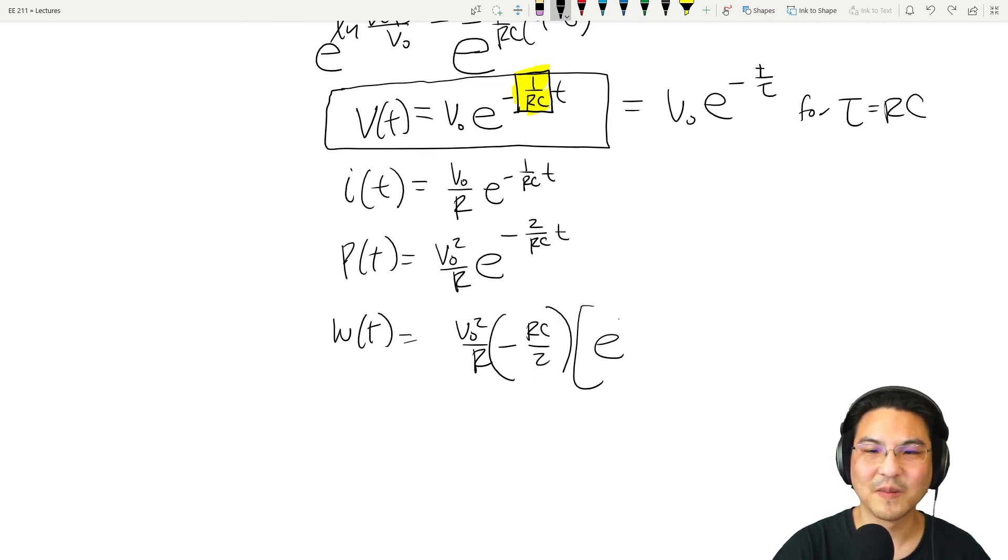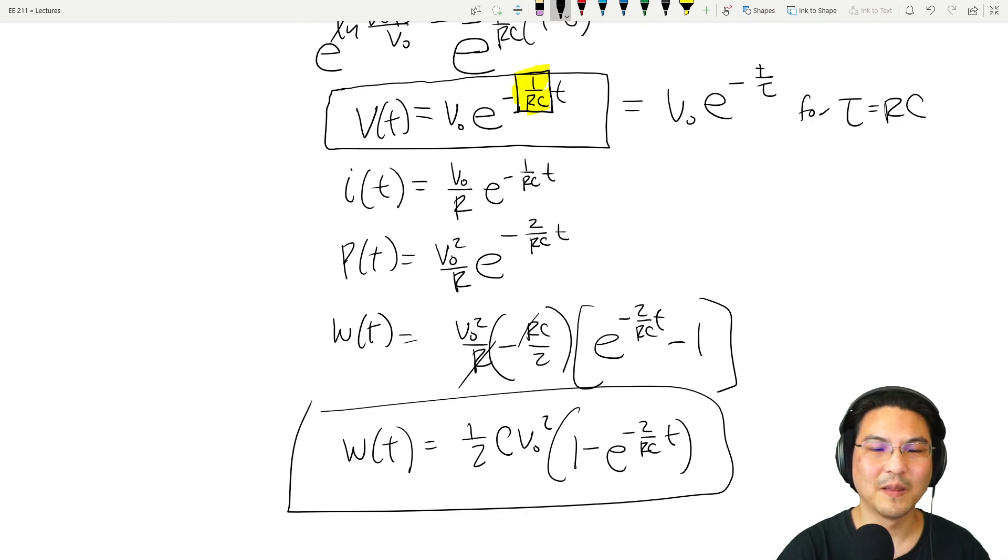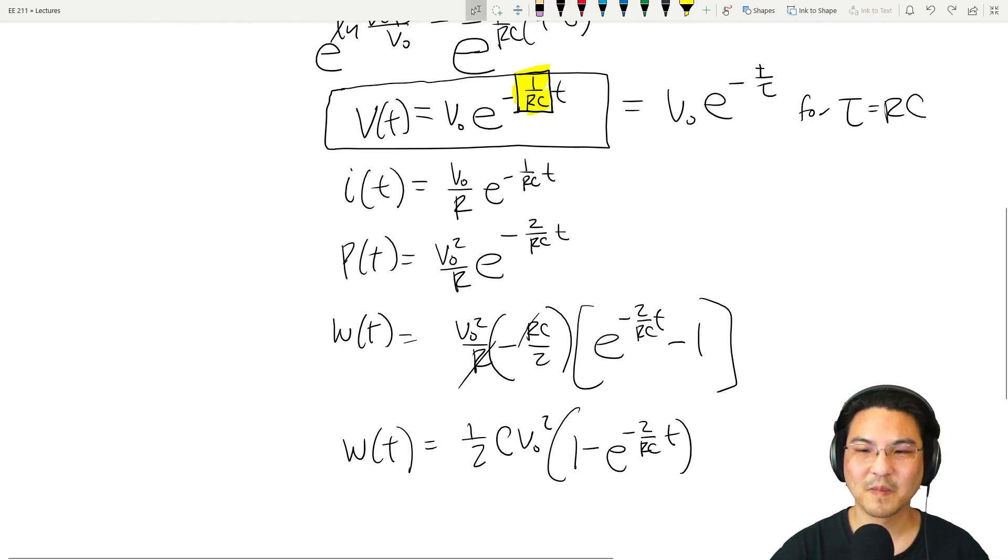It's this times this from zero to t. So if we evaluate that, then it looks like minus one. Let's clean that up just a little bit. So we got R and R, so we got one half C V naught squared. And then see this minus sign, I'll just multiply that through here: one minus e to the minus 2 over RC times t. And there we go, this is the energy absorbed by the resistor.